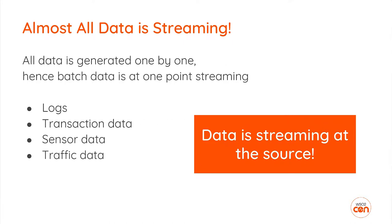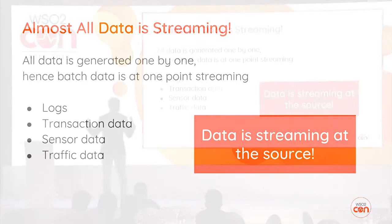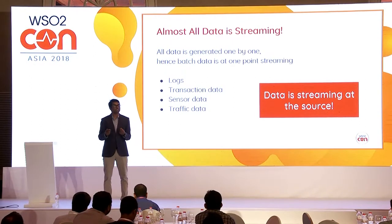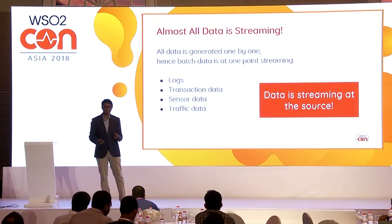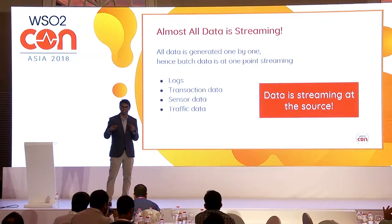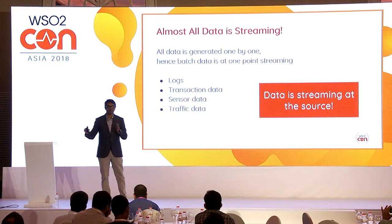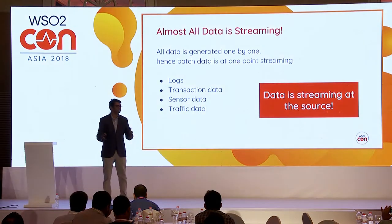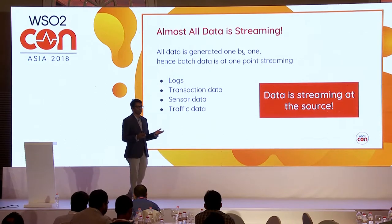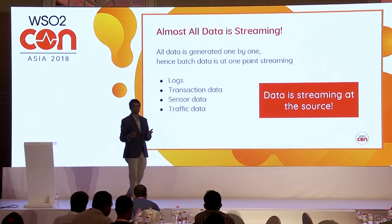If you take batch processing, at some point the data is generated one by one — it's not all generated at the same time. Data is always generated at the source in a streaming way. But due to technical incapabilities, what we basically did was collect everything together and then ship them as files. That's why we had batch processing in the past.